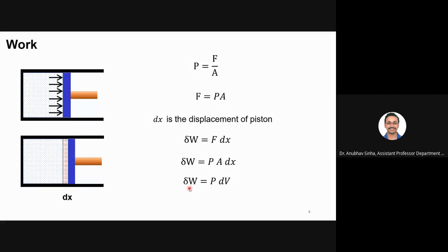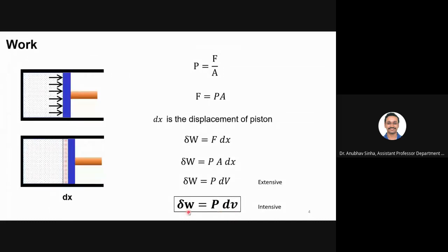This is capital W, which is for extensive property when mass is considered. If we talk about per unit mass — the intensive, specific form — I can write it as delta w equals P·dv, where v is specific volume. So if you are given the total volume, use the extensive form. If you have the specific volume, use this form. This gives you work done per unit mass of the gas or fluid.